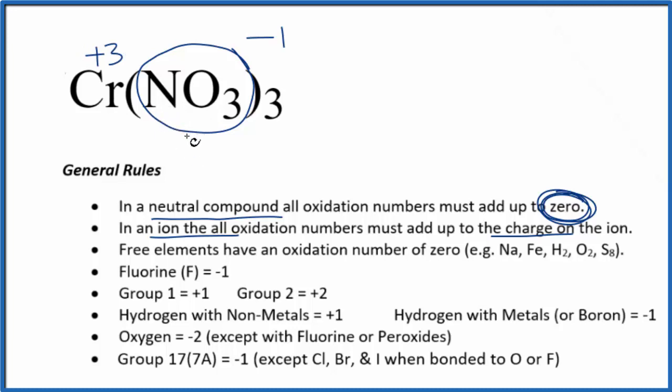If you want to figure out the nitrogen in nitrate, we can set an equation up. We know oxygen has a minus 2 oxidation number, so we can call nitrogen X.